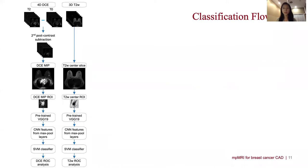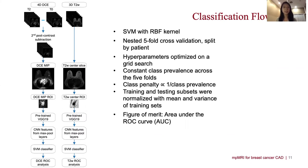For the DCE sequence, we subtracted the pre-contrast image from one of the post-contrast images and took the maximum intensity projection along the axial dimension. For the T2-weighted sequence, we selected a representative center slice for each lesion, and we cropped a region of interest around each lesion from both sequences and extracted features using our model. We then trained an SVM classifier to predict a probability of malignancy score for each lesion, and finally performed ROC analysis to evaluate performance. Training and evaluation was done on a nested five-fold cross-validation split by patient, and class weights were assigned inversely proportional to class prevalence to address class imbalance.